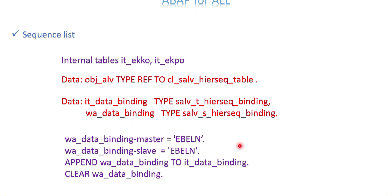In the work area for binding, the field names are master and slave — normally we call them header and item, but technically they are called master and slave. The binding for master and slave here is field EBELN. If it is more than one field you have to repeat this and append it row by row. Keep the data ready in your binding information internal table.